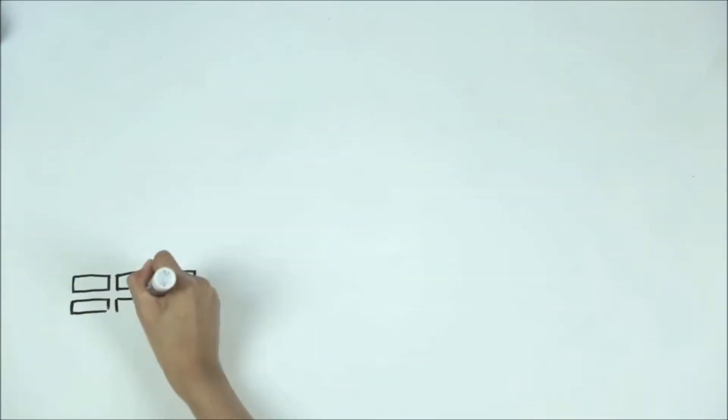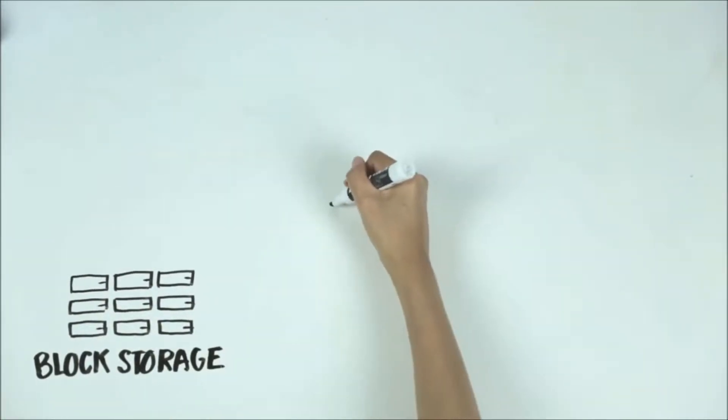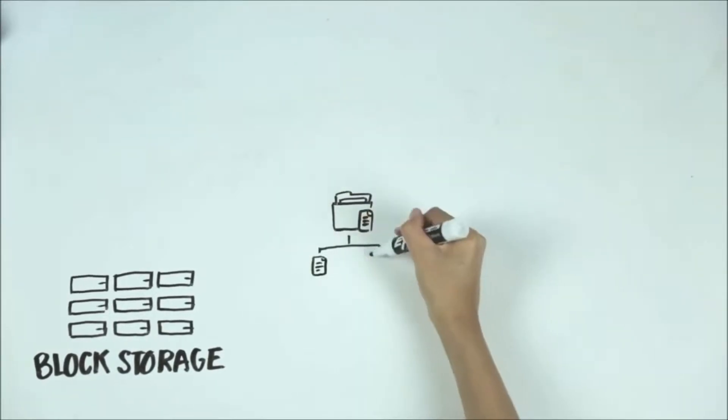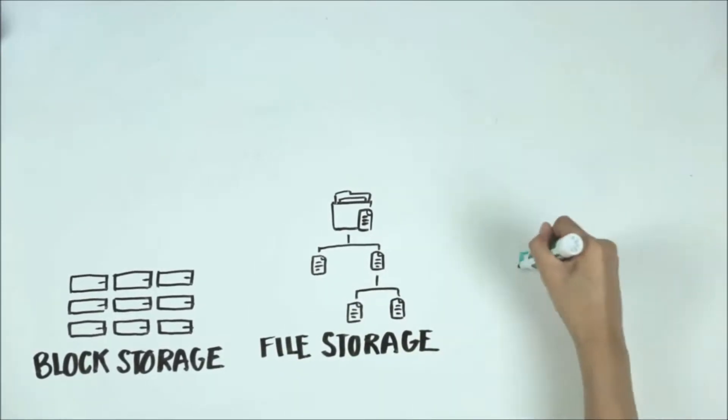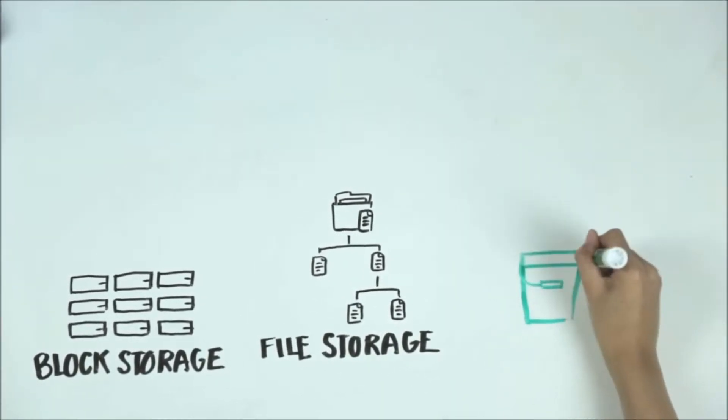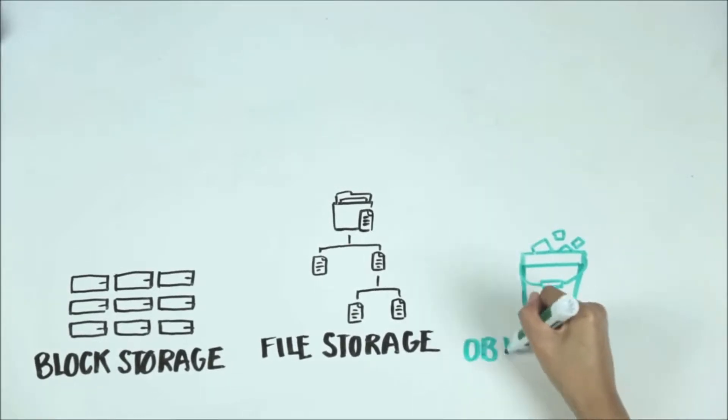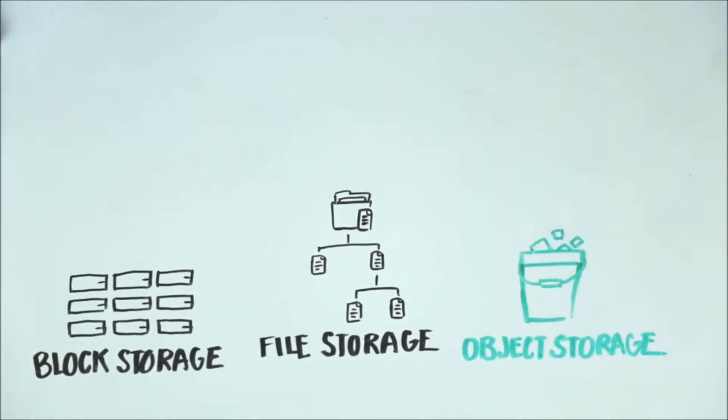As opposed to the most common enterprise data storage models, block storage, which stores data in block-sized blocks, and file storage, which stores data as a file hierarchy, object-based storage stores data in a flat organization of flexibly-sized containers called buckets, ideal for handling unstructured data or data in a cloud.